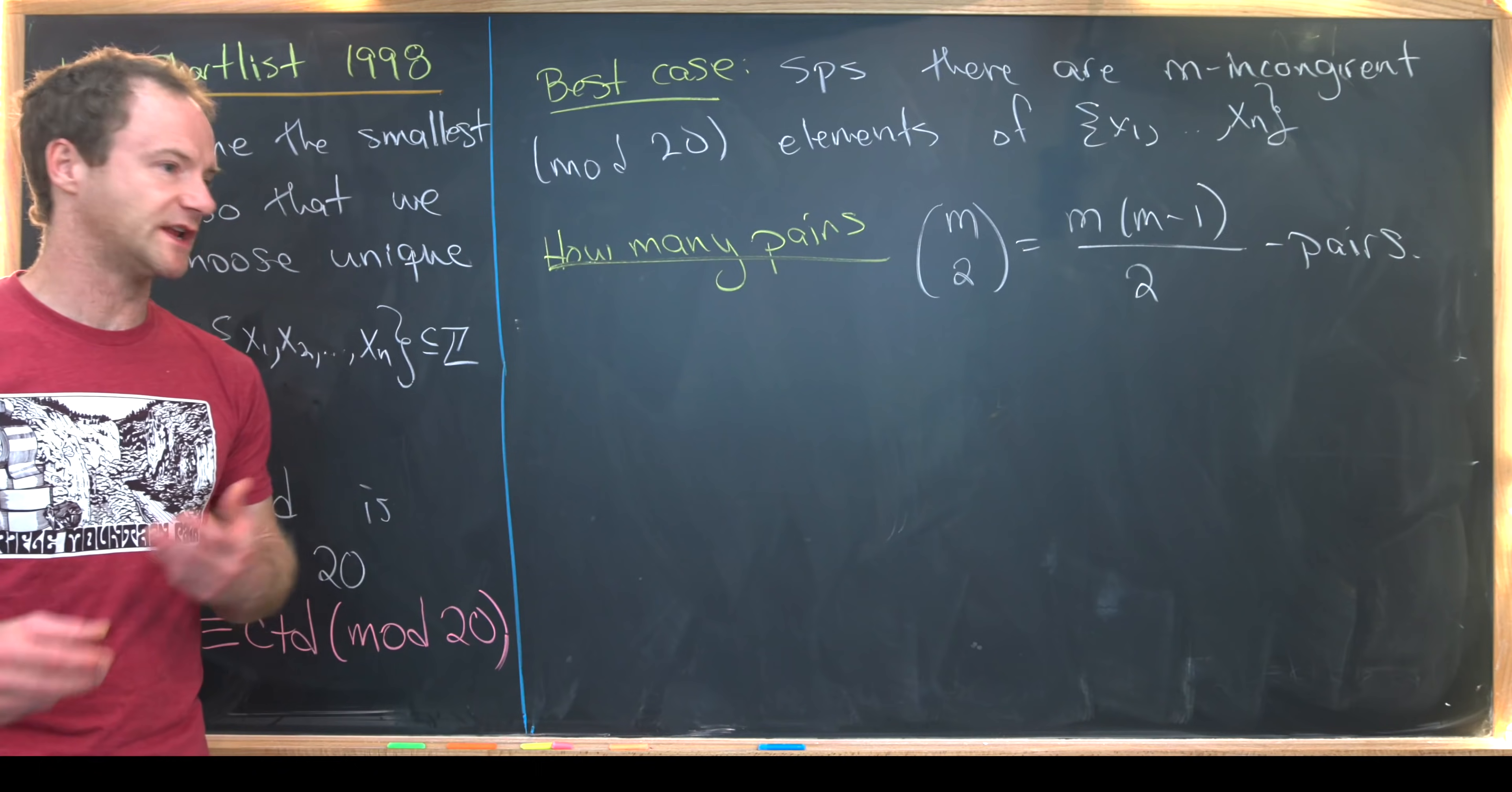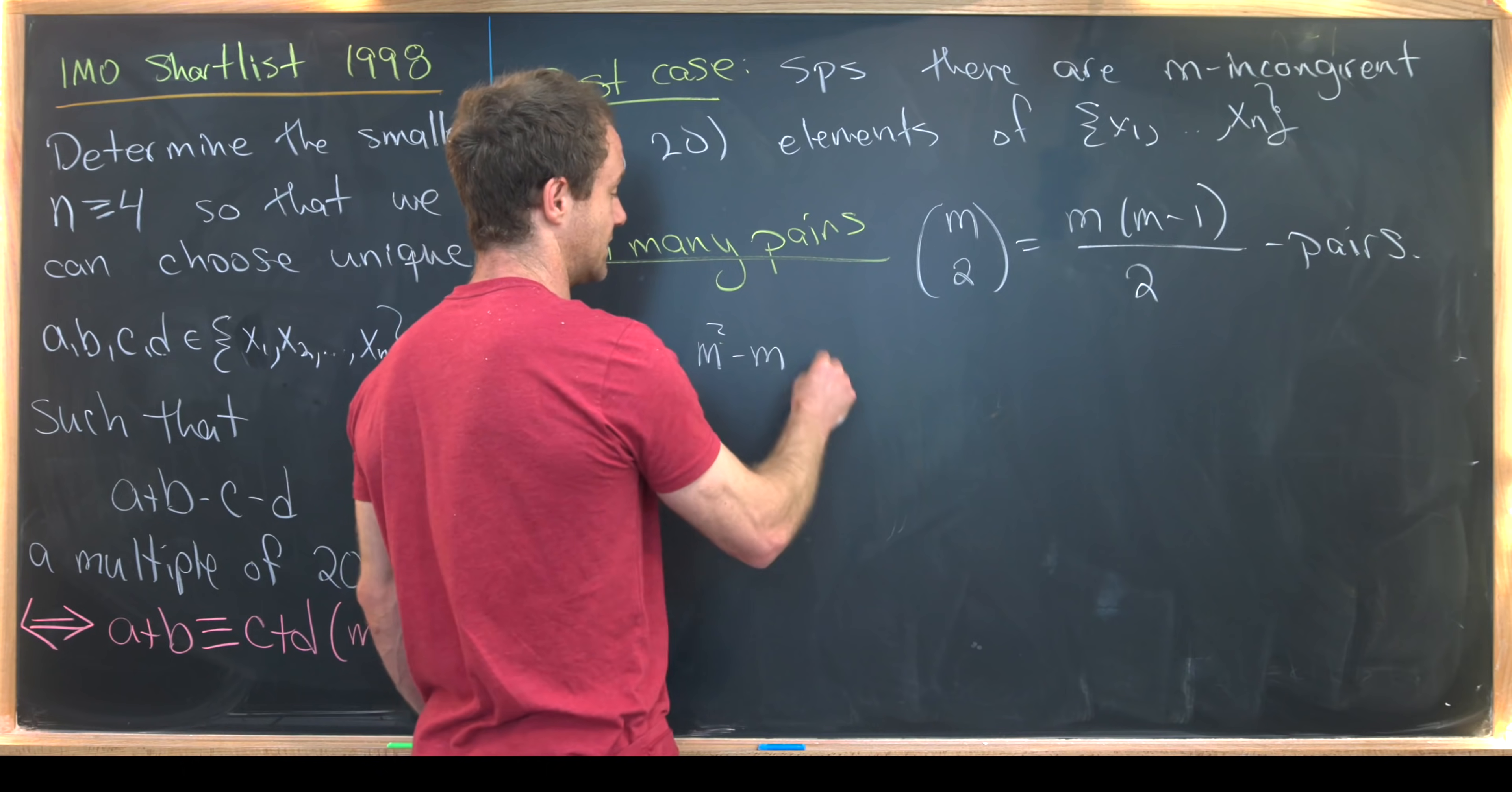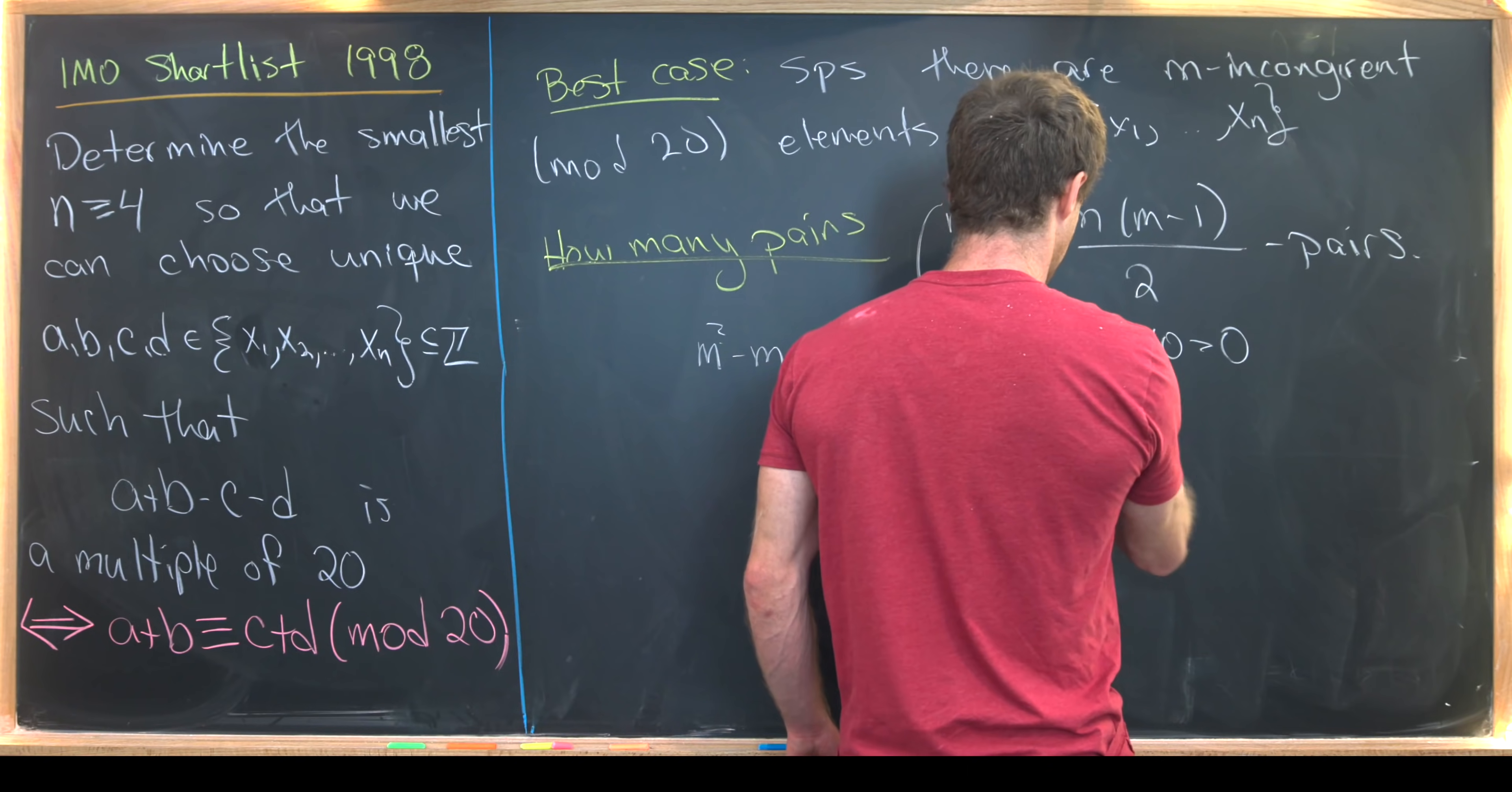So using the fact that there are 20 residue classes mod 20, we need this number to be bigger than 20 in order to guarantee that two of the sums have the same value. In other words, they lie in the same equivalence class. So when does that happen? Well, let's just multiply this out. We need m squared minus m to be bigger than 40. That's just by multiplying that 2 over there. But that means we need m squared minus m minus 40 to be bigger than 0. But then just by some elementary algebra, we can see that this occurs if m is bigger than or equal to 7.